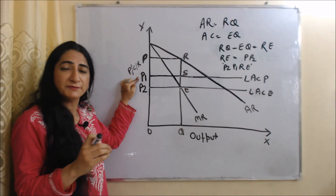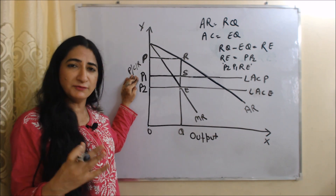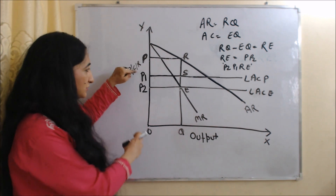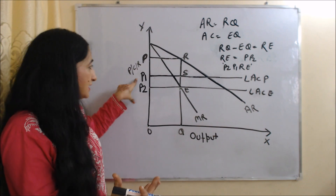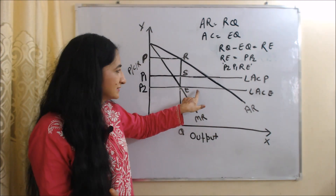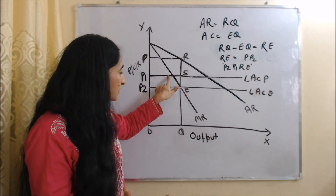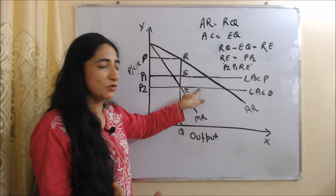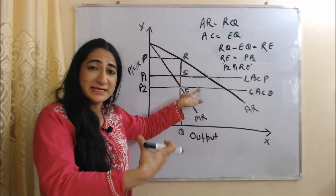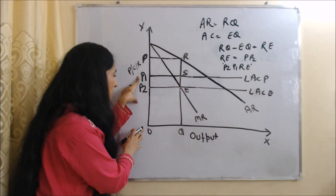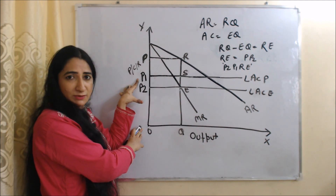But OP1 price is beneficial for existing firms. How can we say OP1 price is beneficial for the existing firm? Because at OP1 price, the existing firm is still getting some profit. OP1 price is above the cost of the existing firm — if price is more than cost, the existing firm is still earning some profit. So OP1 price is not beneficial for new firms but is beneficial for existing firms.